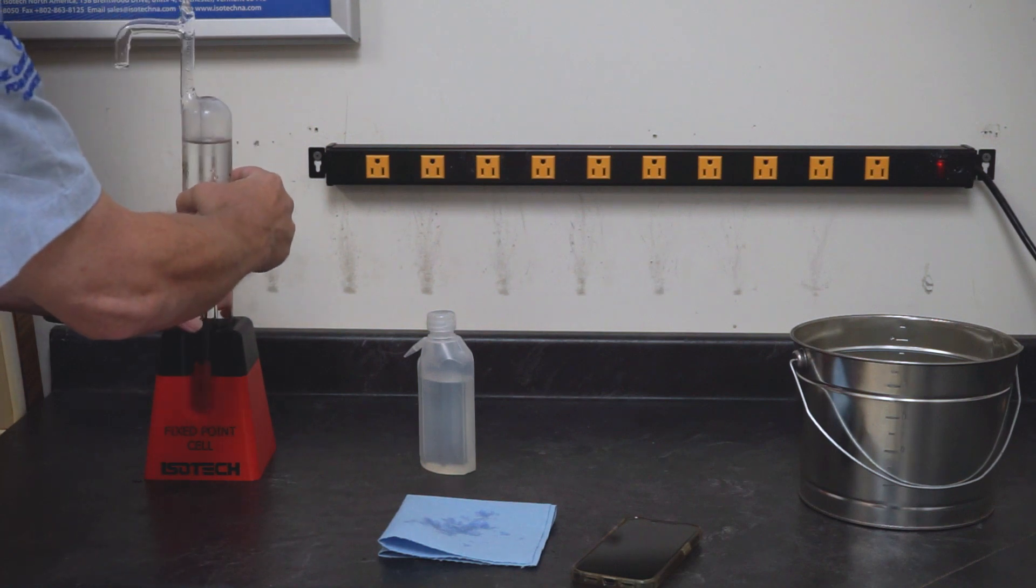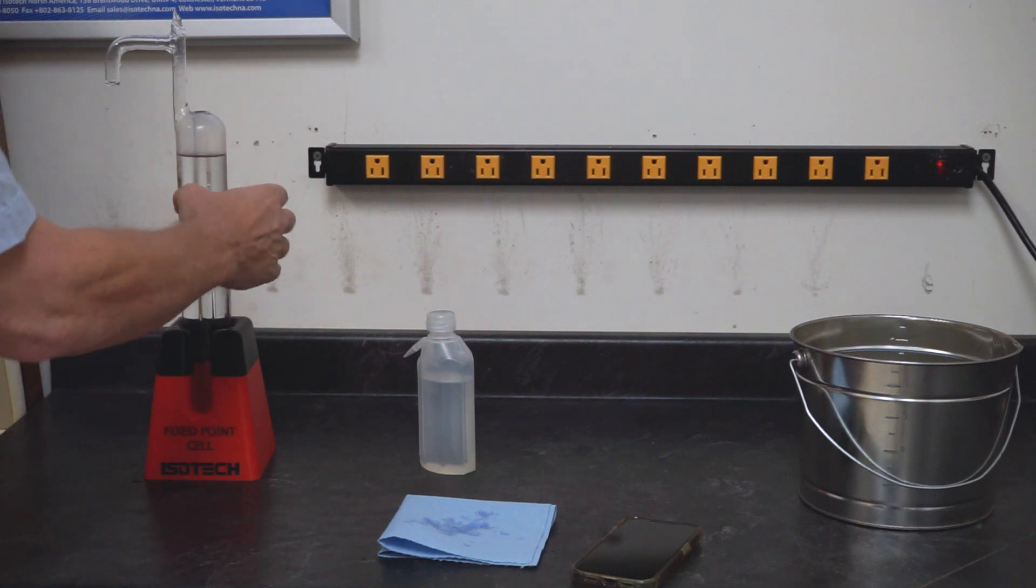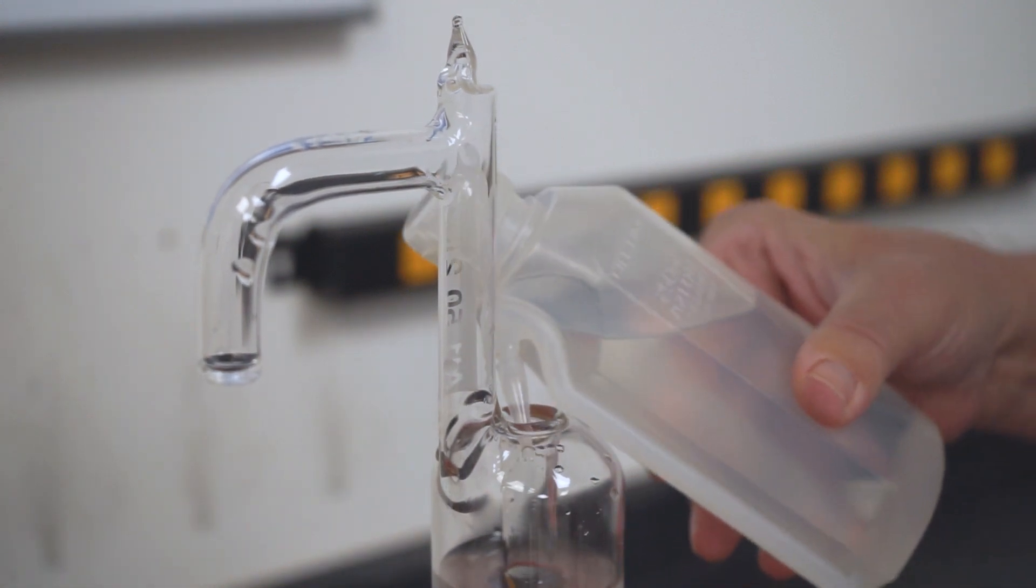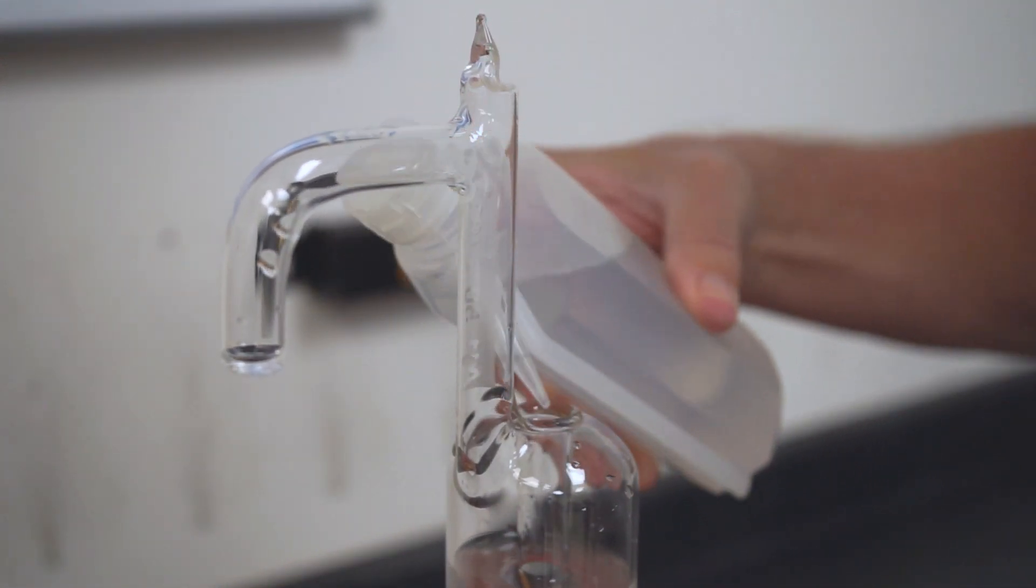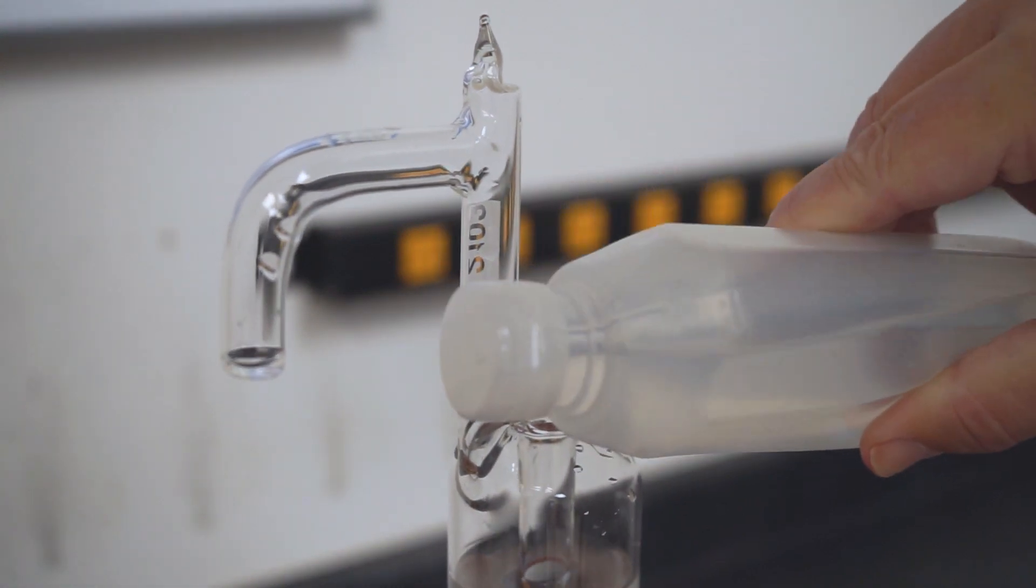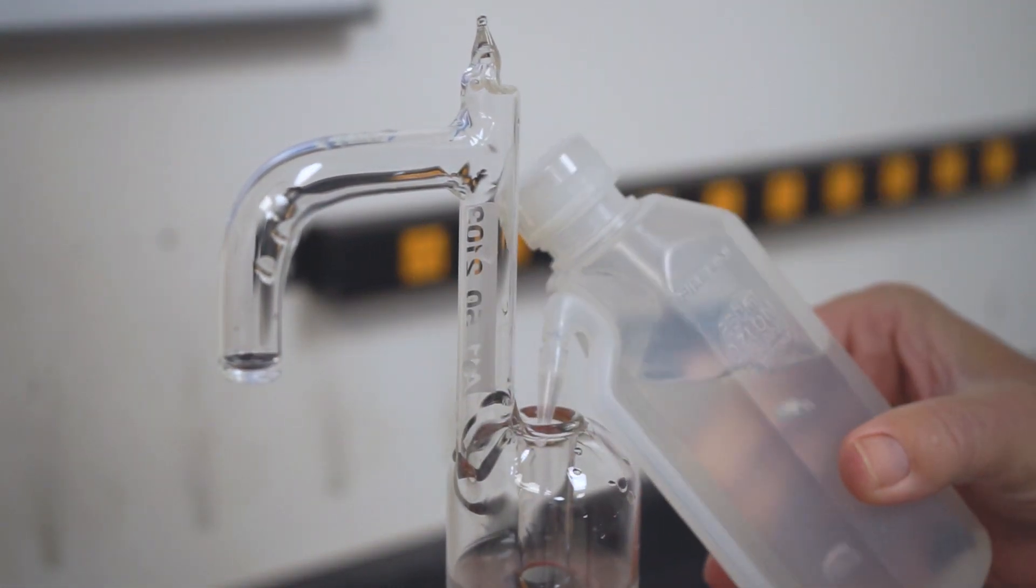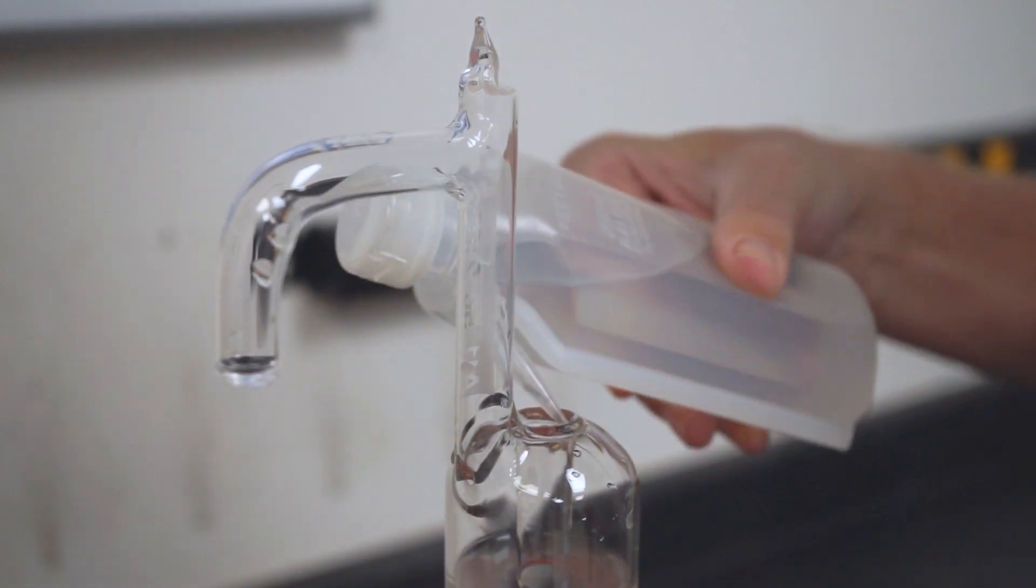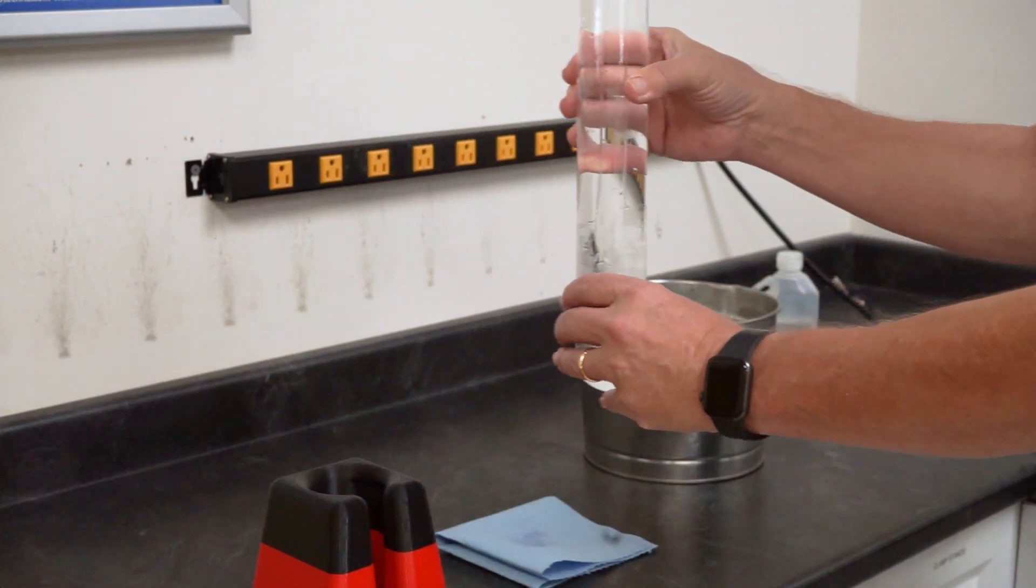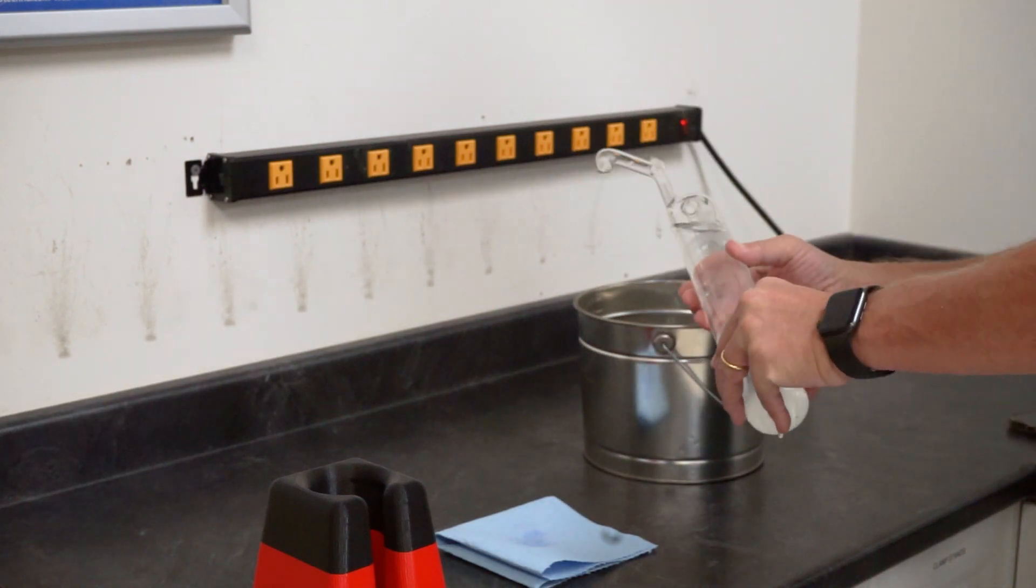After removing the cell from the maintenance bath, carefully place the cell in the cell stand. Then do two laps around the top rim with an acetone dispenser. Acetone is hygroscopic which means that it absorbs and dries water to minimize ice growth in the re-entrant tube of the cell. Once the acetone reaches the top of the cell's water line, remove the cell from the stand and dispose of the acetone into your waste receptacle.